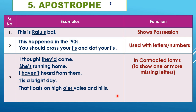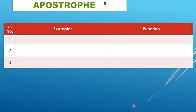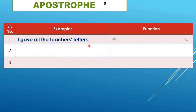There are some special cases for apostrophe. 'I gave all the teachers' letters' — here 'teachers' is plural, so the apostrophe comes after the plural S with no additional S. This shows possession of plurals ending in S. The apostrophe after the S indicates it belongs to multiple teachers.